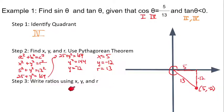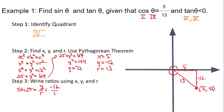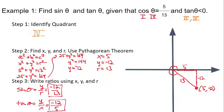Armed with this information, we're ready to finally answer the question by writing our trig ratios. Sine theta, which the question asked for, is y over r — that would be −12/13. And tan theta is y over x, which gives us −12/5.